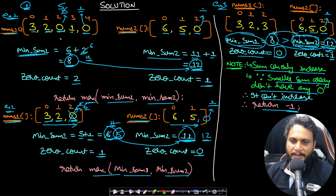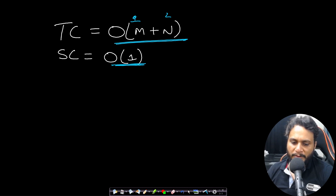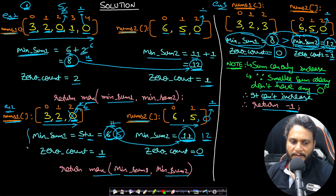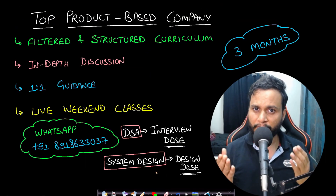The algorithm is straightforward: if the value is non-zero, add it; if it is zero, add 1. The time complexity is O(m + n) where m and n are the sizes of the two arrays, since we iterate through each array once. The space complexity is O(1) because we only use a constant number of variables.